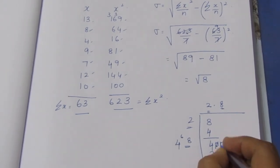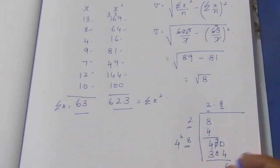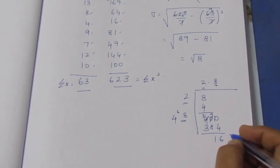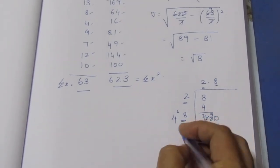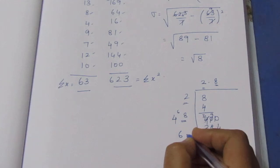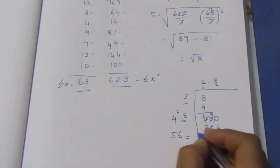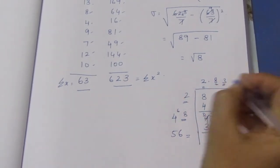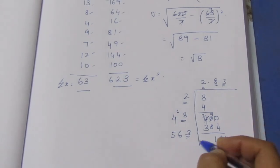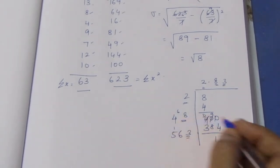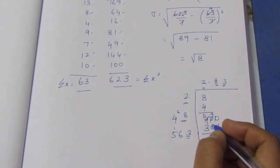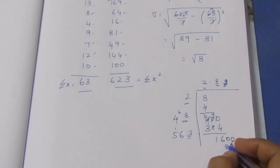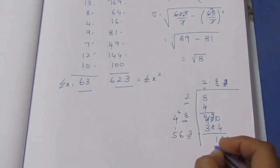Now working through the calculation. Looking at the decimal point: 3's are 9, 3's are 18, 3's are 15, giving 16. Then: 2, 3's are 6, 2's are 12, 2's are 10. Doing 28 into 2 gives 56. The result works out to approximately 2.82.